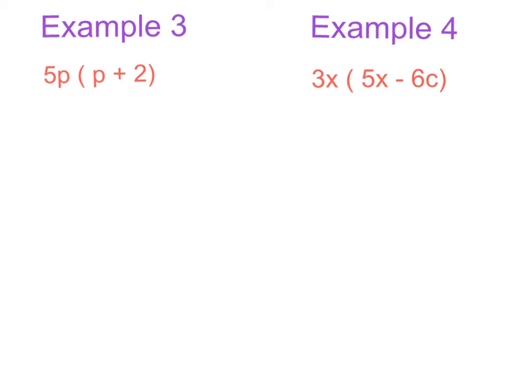Two more examples here. Example 3 is 5p multiplied by p plus 2. We don't need to write top and side if you understand the method at this point. So along the side here I'm going to write 5p, and along the top I'm going to write p plus 2.